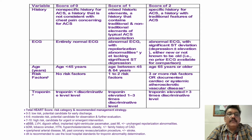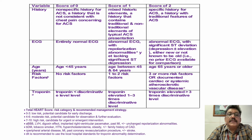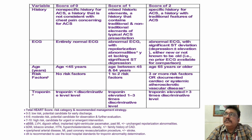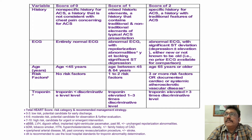Sometimes we need to repeat troponin I or T to observe serial elevations. Another important ECG variable is LBBB — new onset LBBB should be considered equivalent to ST elevation MI. LBBB itself is an ischemic heart disease change, so new onset LBBB with or without chest pain and elevation of cardiac enzymes should be considered as myocardial infarction.